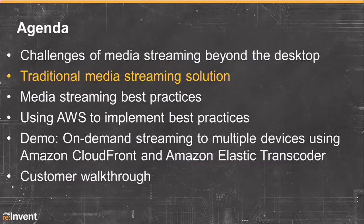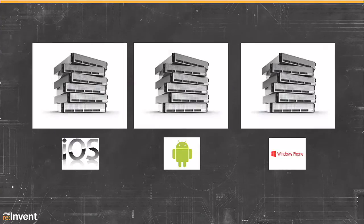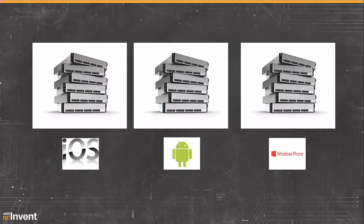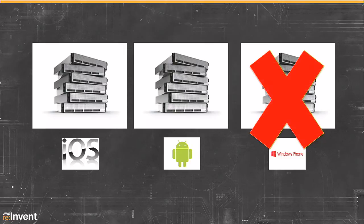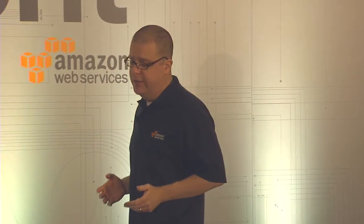Let's look at the traditional way of doing things and then what we think are some better practices. Traditionally, video publishers would run separate stacks — one stack dedicated to reaching iOS devices, another for Android devices, and a third for Windows phones. Except that's really costly. So a lot of folks say they're going to cut out availability — they won't bother reaching Windows phone customers in order to reduce cost and complexity. That's a hard tradeoff.